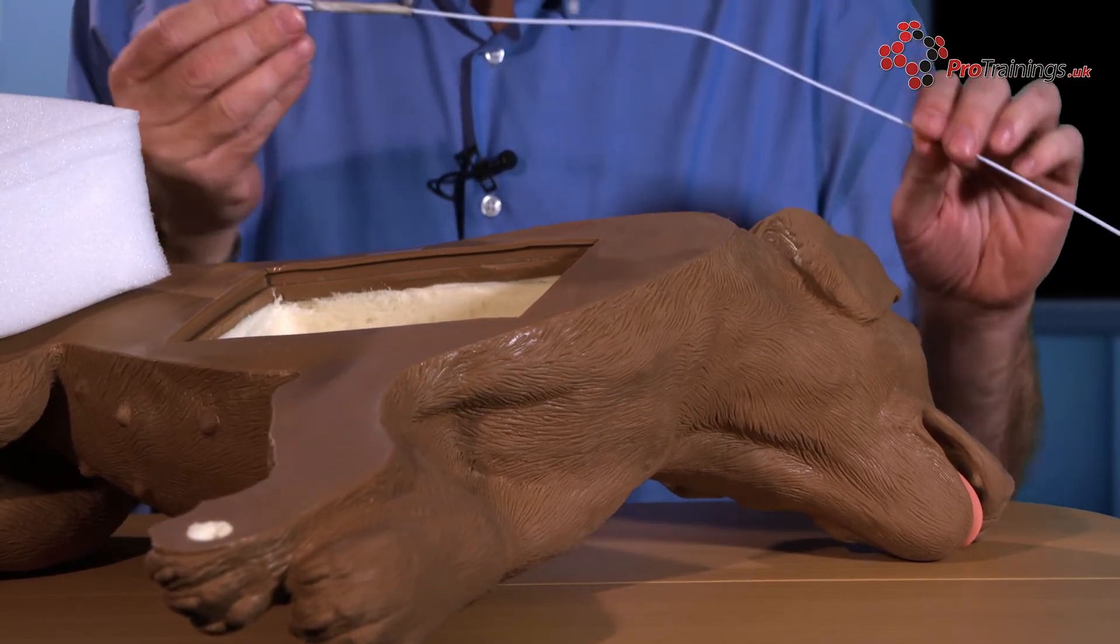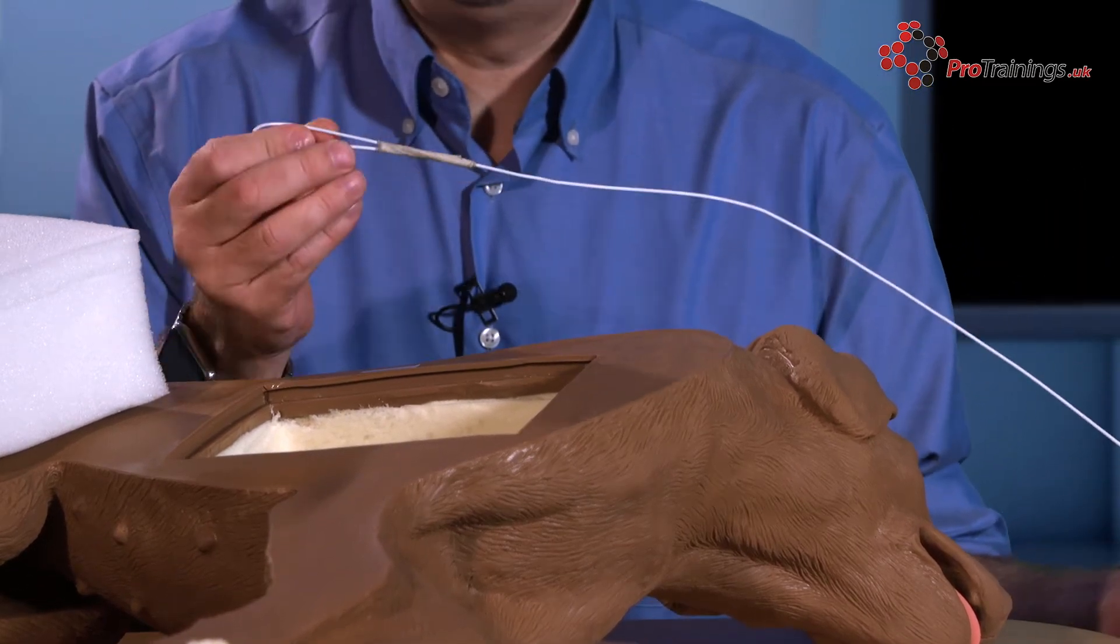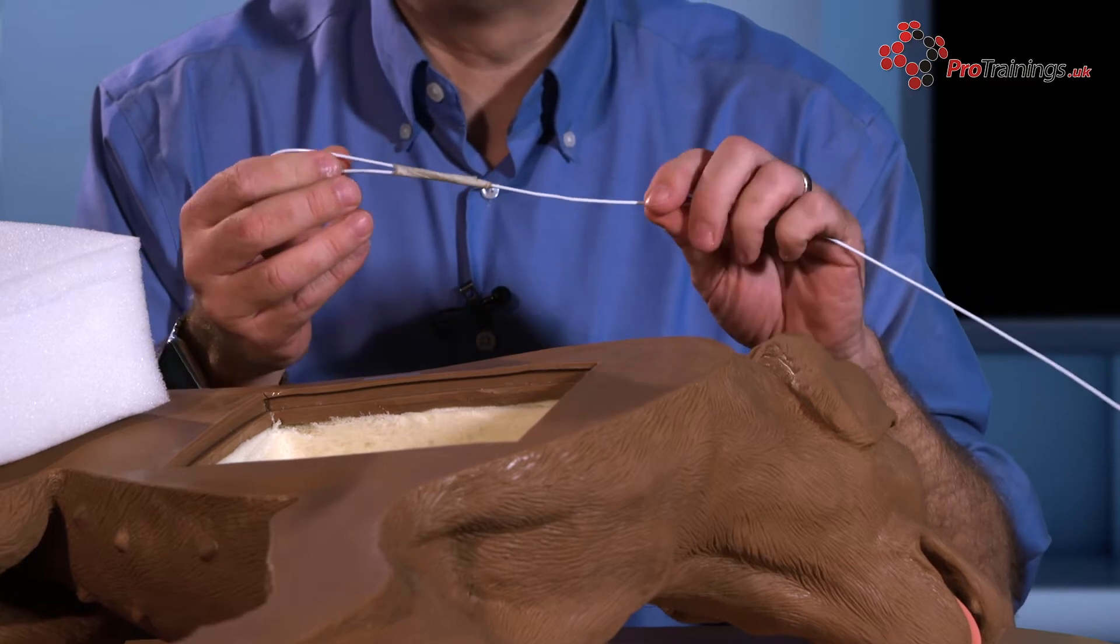Now, the next thing you need is a coat hanger. These coat hangers are just the really cheap thin coat hangers we get from local dry cleaners.